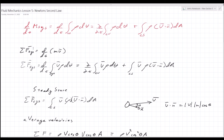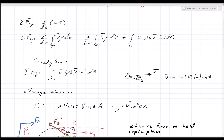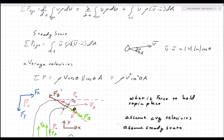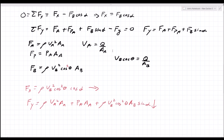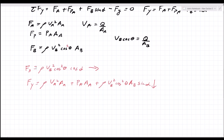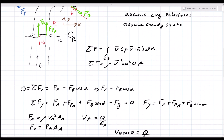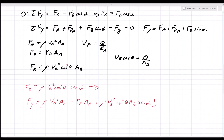To review: we found the forces on the system using the rate of change of linear momentum, creating an equation for the sum of forces. Then we applied the steady-state condition where any time derivative goes to zero, then average velocities where no integration is required. We then solved this example problem, summing all forces to find fx and fy needed to hold the cap in place.